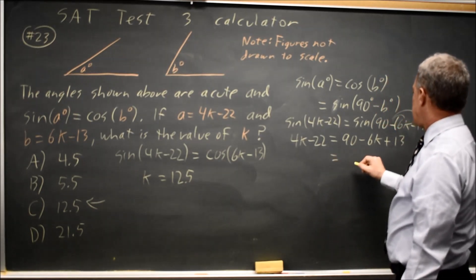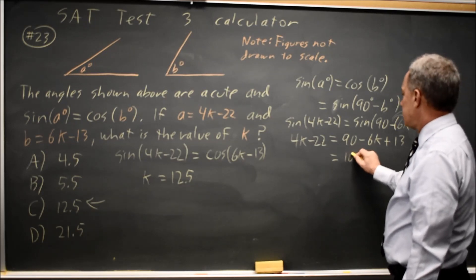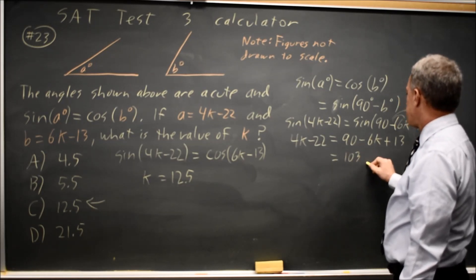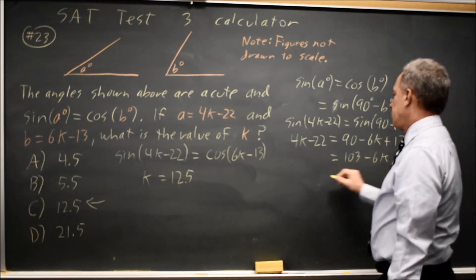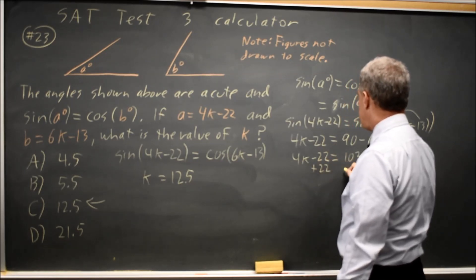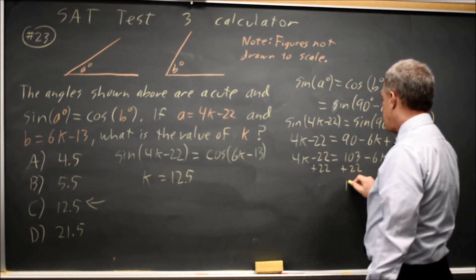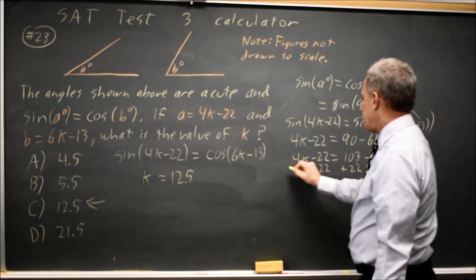Now, simplifying, 90 plus 13 is 103 minus 6k equals 4k minus 22. Add 22 to both sides, and I get 125. Add 6k to both sides.